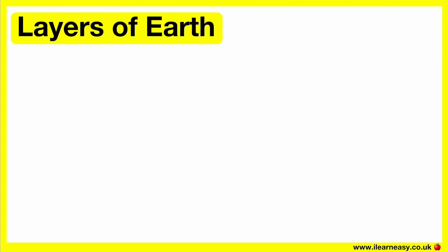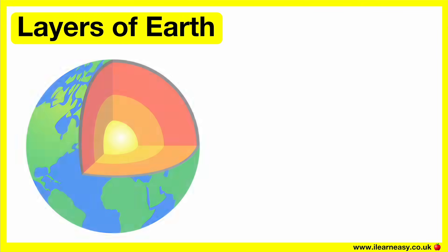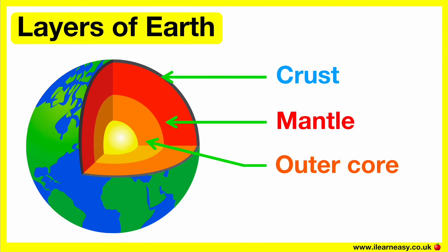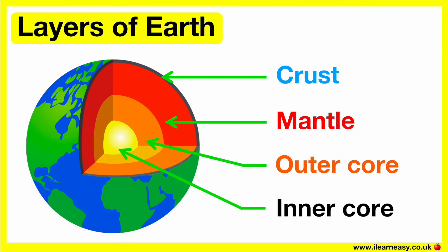Layers of Earth. In this video, we will learn about the layers of Earth. The Earth is made up of different layers. The four main layers are: the crust, the mantle, the outer core, and the inner core. Each layer can be divided further into: continental crust, oceanic crust, upper mantle, lower mantle, outer core, and inner core.